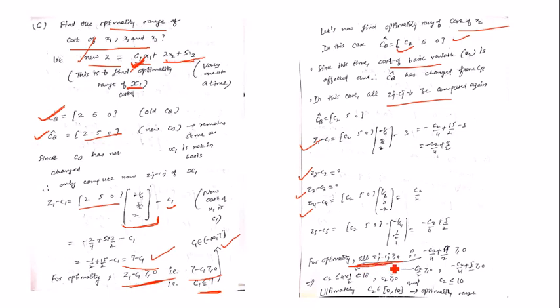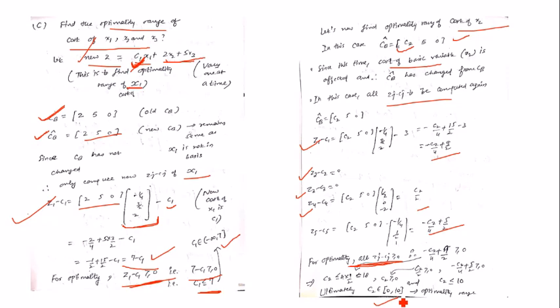We compute z1 − c1, z2 − c2, z3 − c3, etc., all in terms of c2. For optimality, all these must be non-negative simultaneously. This gives more than one condition in terms of c2, and we take the intersection of all conditions. The result is that c2 must belong to the interval [0, 10].